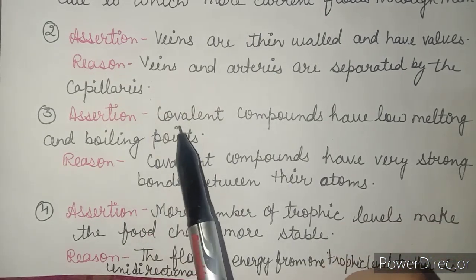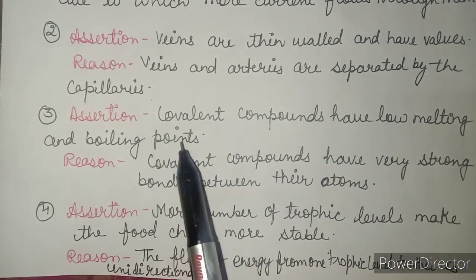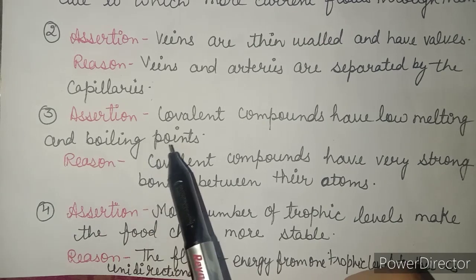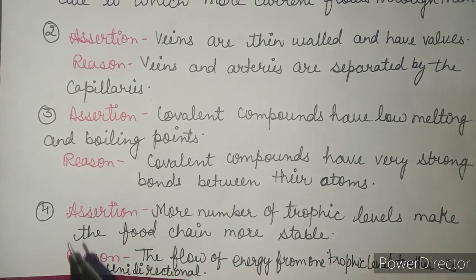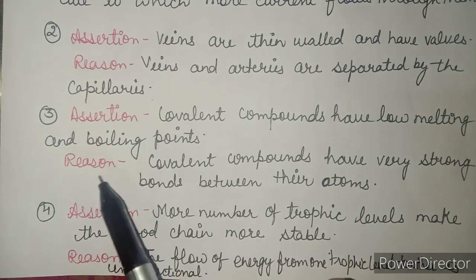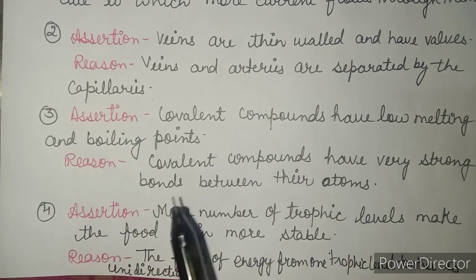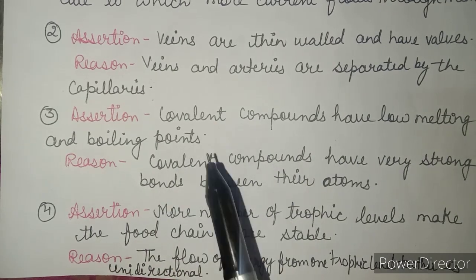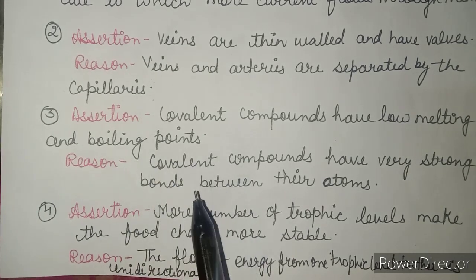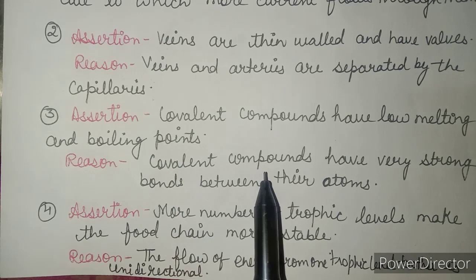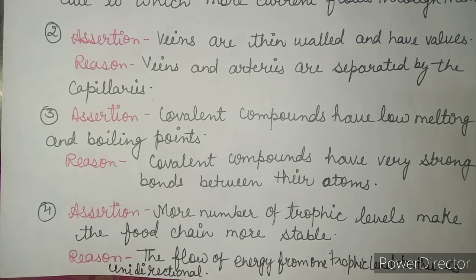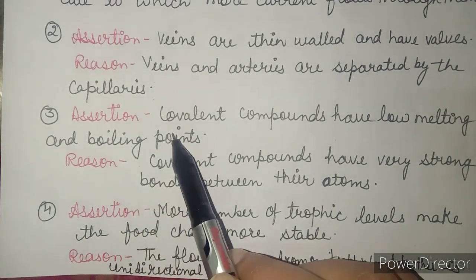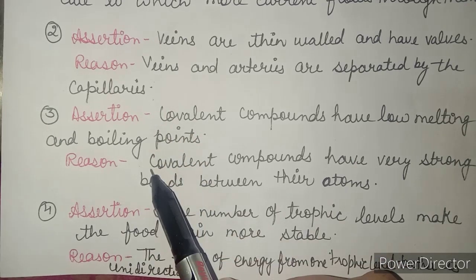In the third example, the assertion is: covalent compounds have low melting and boiling points. The reason given is: covalent compounds have very strong bonds between their atoms. The reason is wrong, because covalent bonds are actually weak, whereas ionic bonds are strong — that is why ionic compounds are stronger. So assertion is true but the reason is false.